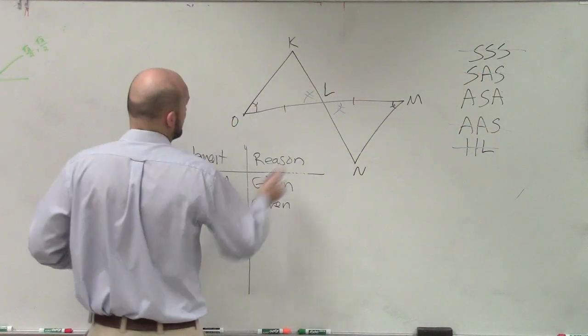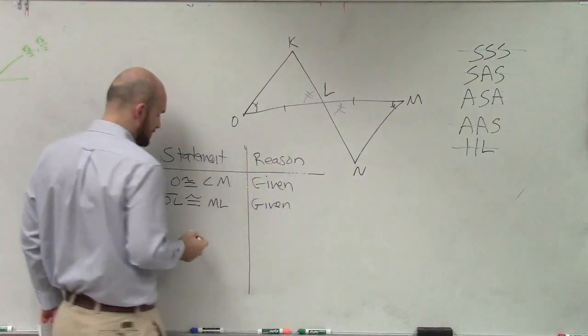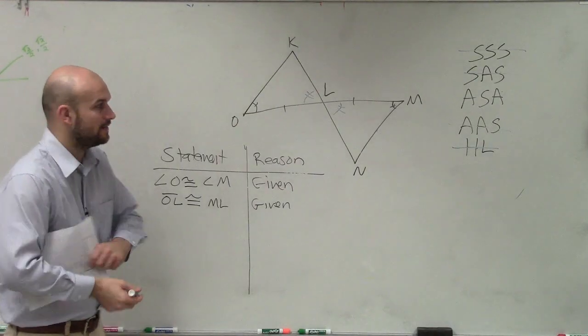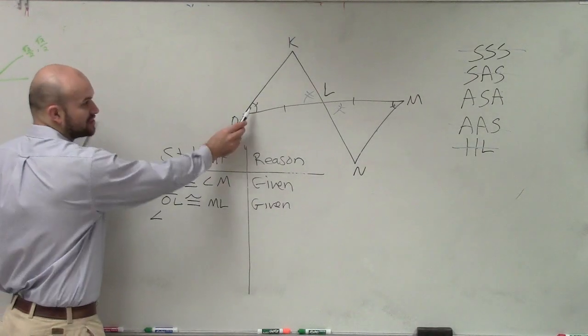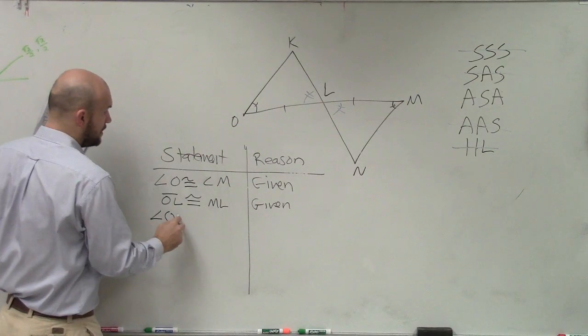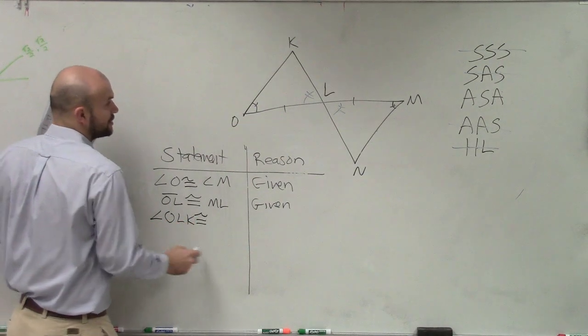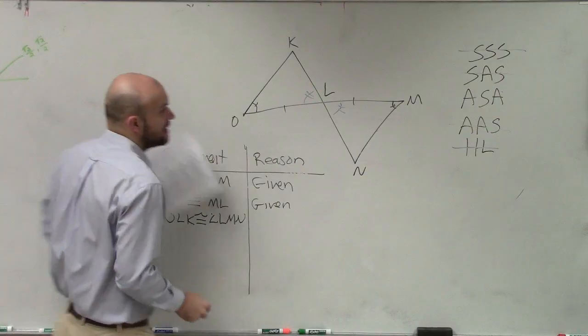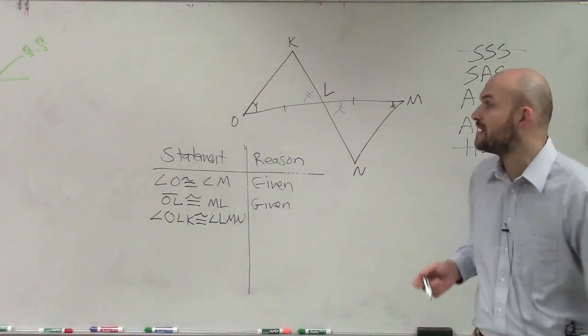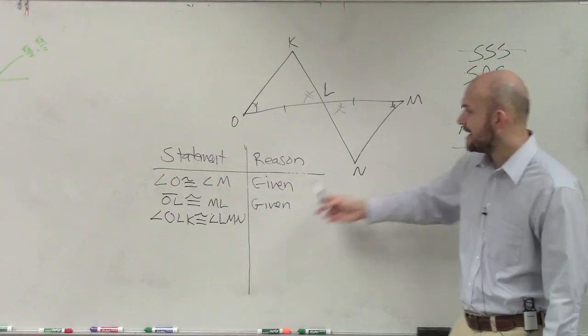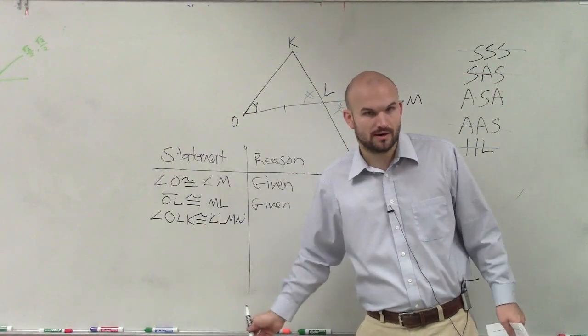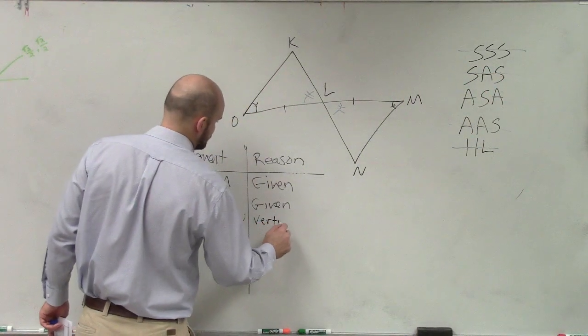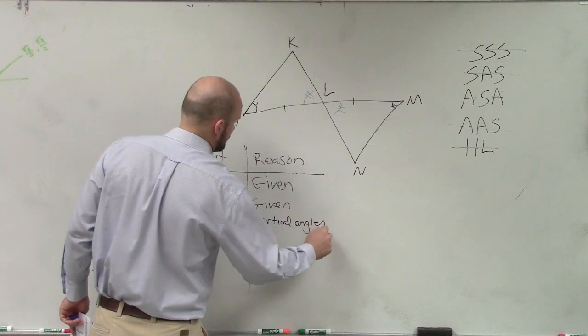So the next thing what I would say is, now notice, since these angles are shared, I'm going to use three letters to label these angles. Don't call it angle L and angle L. So what I'm going to do is I'm going to say angle OLK is congruent to angle MLN. Notice how I labeled them correctly with corresponding angles. Since O corresponds to M, I started each angle with their corresponding part. So now, the reason why is we have vertical angles are congruent.